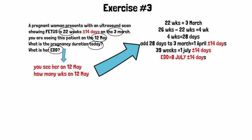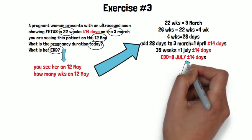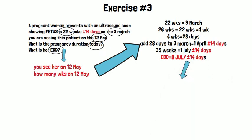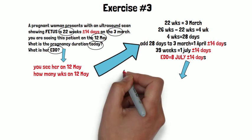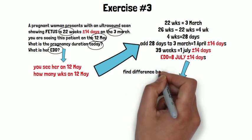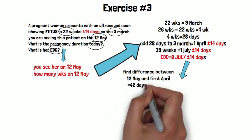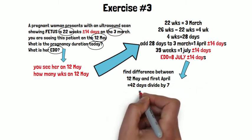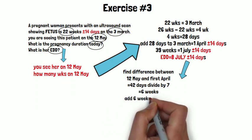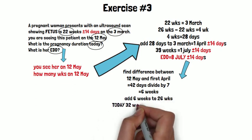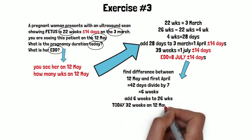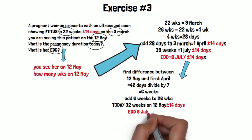Consequently she will be 39 weeks on the 1st of July plus or minus 14 days, and one week further on, her expected date of delivery will be the 8th of July plus or minus 14 days. To find how many weeks she is on the 12th of May: the difference between the 1st of April and the 12th of May is 42 days. Forty-two days divided by 7 is 6 weeks. Adding 6 weeks to 26 weeks gives 32 weeks. So she is 32 weeks plus or minus 14 days on the 12th of May.